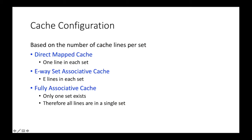One of the most important cache configurations is based on the number of cache lines per set. The direct mapped cache has only a single cache line in each set, and an E-way set associative cache has E number of cache lines in each set. Fully associative cache has all cache lines in a single set — in other words, only one set exists in a fully associative cache. These different cache configurations yield different performance characteristics, which we will discuss later.